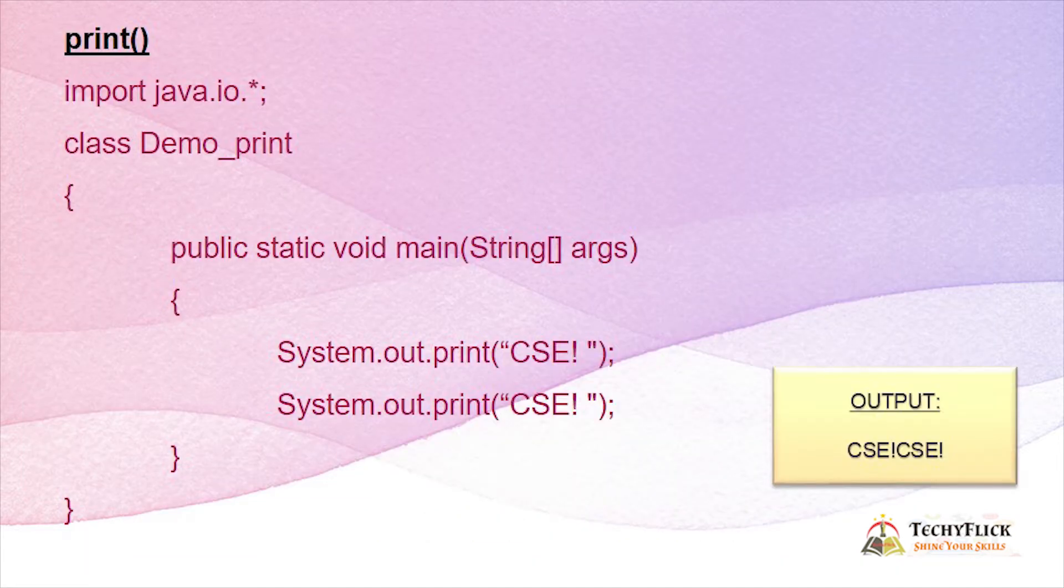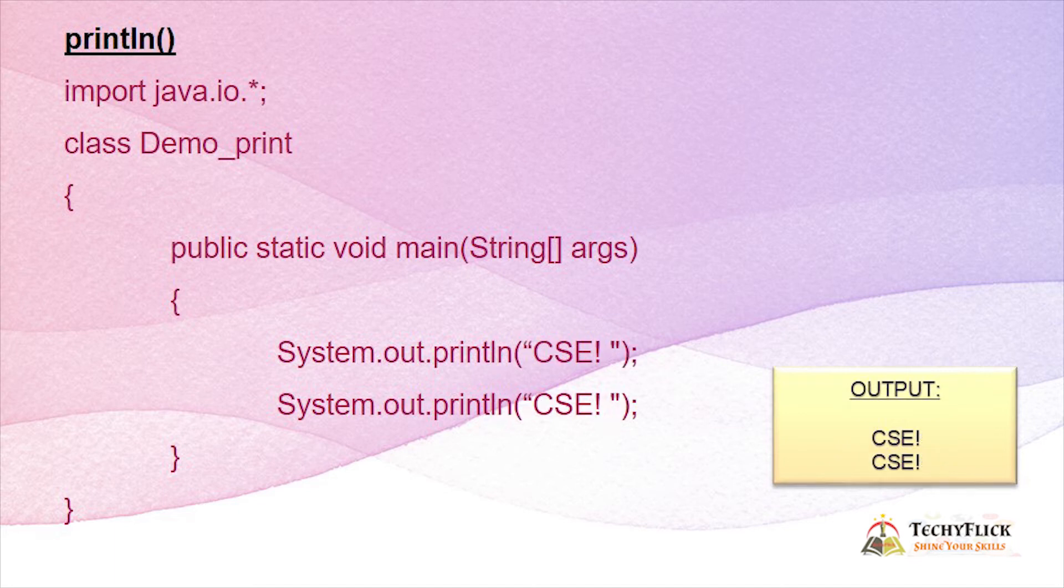Print - we have output System.out.print for CSE. Next, System.out.println for CSE. Print will print on the same line, println will print on the next line.